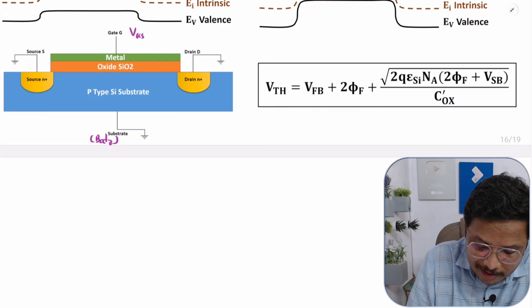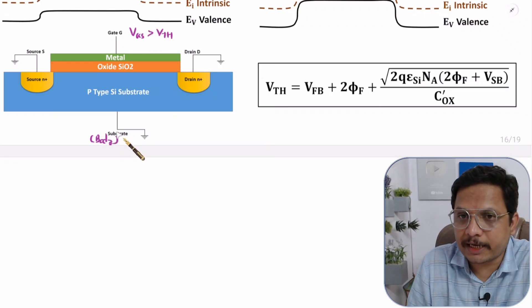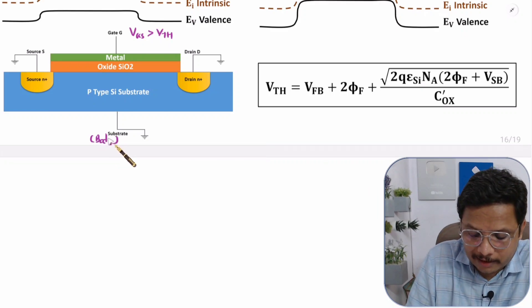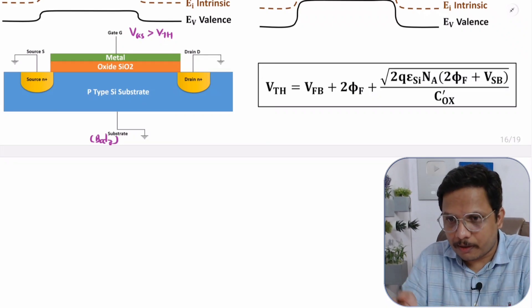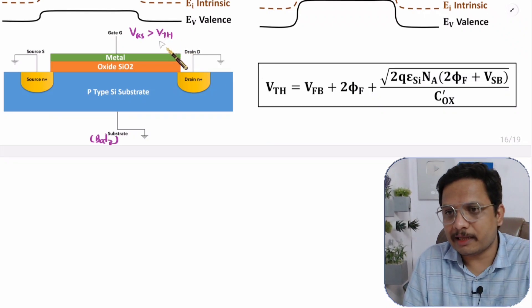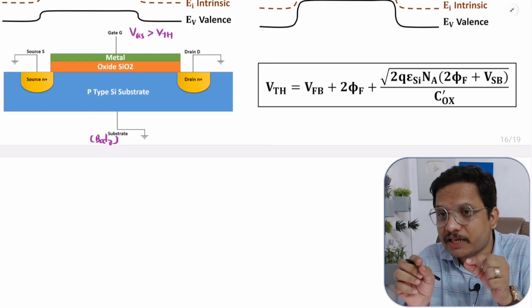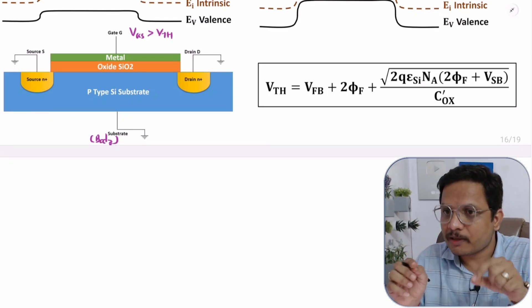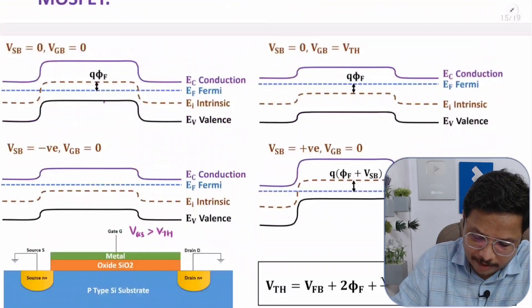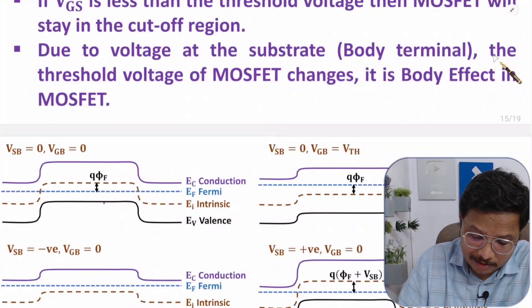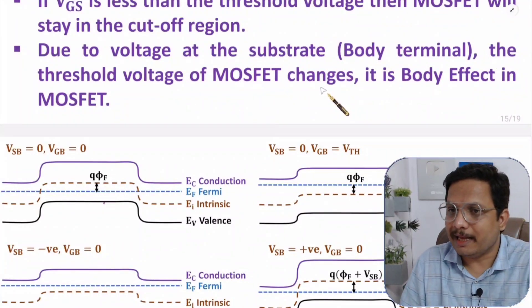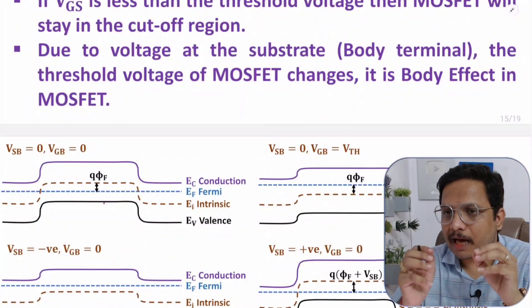If you apply some voltage at the body, there is a possibility that the threshold voltage VTH will change. To have operation you need to apply VGS greater than VTH. If you apply some potential at the substrate or body, VTH will change, and as VTH changes, the operational regions of MOSFET will change — that effect is the body effect.